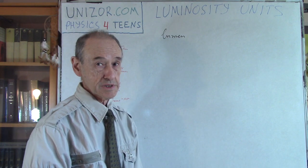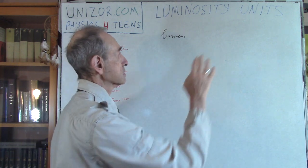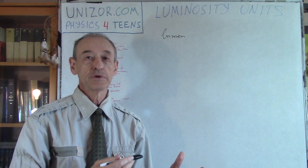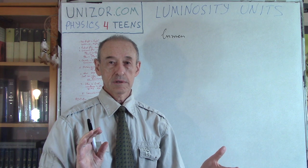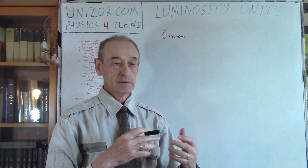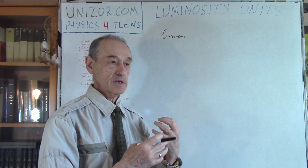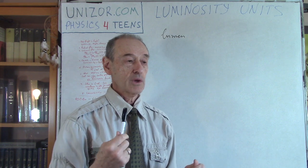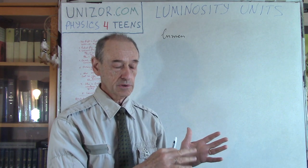Lumen is the unit of luminous flux, which means it's total output from the source of light. But we also need to consider direction, because sometimes a source of light gives uniform light in all directions, sometimes not. We need to define brightness in a particular direction. For this reason, we use the concept of angle — but not a flat angle; it's an angle in space, a solid angle.